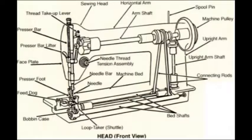A sewing machine is a machine used to stitch fabric and other materials together with thread. Sewing machines were invented during the first industrial revolution to decrease the amount of manual sewing work performed in clothing companies.